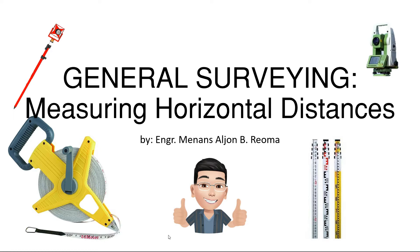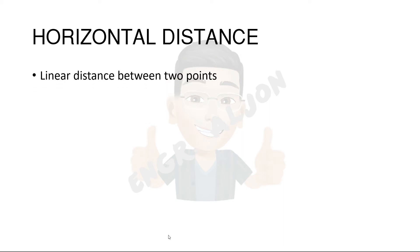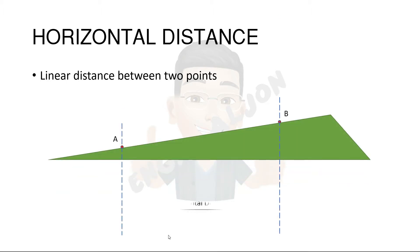Measuring Horizontal Distances. First, we need to know what a horizontal distance is. Horizontal distance is the linear distance between two points. If the points are at different elevations, the horizontal distance is the distance between the plumb lines at the points.